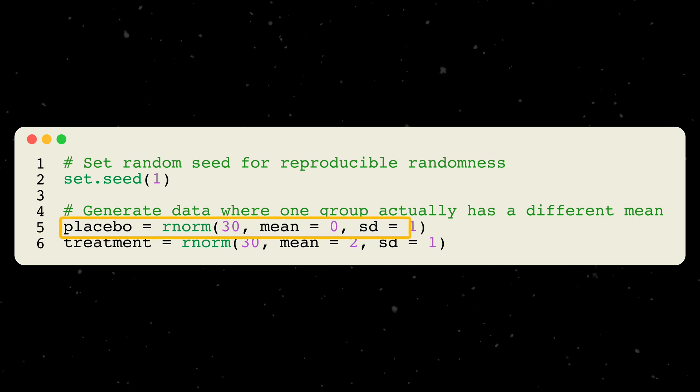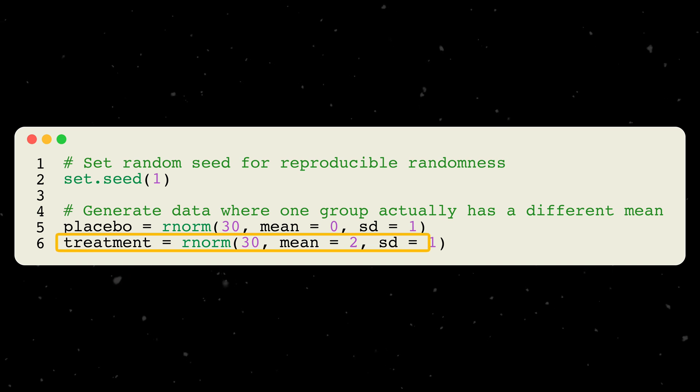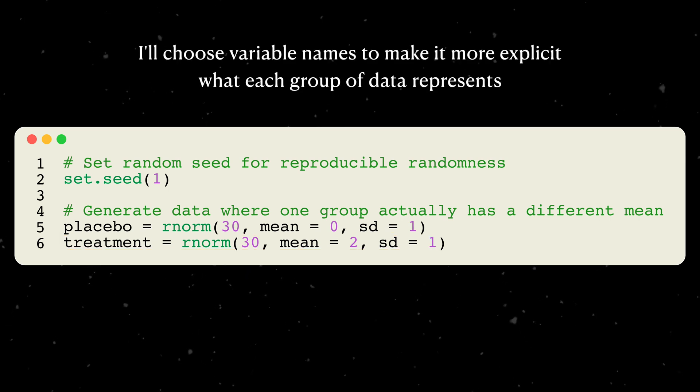I'll generate 30 observations for one group from a standard normal distribution, and I'll generate data for a second group also from a normal distribution with a mean of 2 and with unit variance. To help ground this synthetic data a bit, I'll call one vector placebo and the other vector treatment.